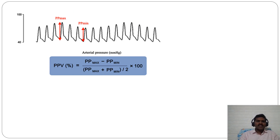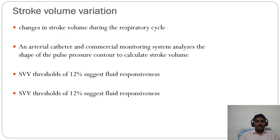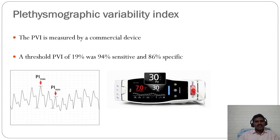PPV is calculated as: (PP_max − PP_min) / ((PP_max + PP_min)/2) × 100, read from the arterial waveform. Stroke volume variation (SVV) measures changes in stroke volume during the respiratory cycle, usually measured by thermodilution or pulse contour analysis of the arterial waveform. An SVV threshold of 12% identifies fluid responsiveness. Plethysmographic variability index (PVI) is measured by a commercial device; a threshold of 19% gives 94% sensitivity and 86% specificity for fluid responsiveness.